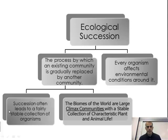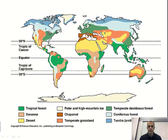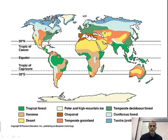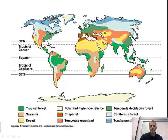There are two different types of succession we're going to look at. But first, here are the different stable communities or ecosystems — referred to again as climax communities. You've probably heard these back in junior high. These are your stable or climax communities, and you can see how they're dispersed throughout the world.